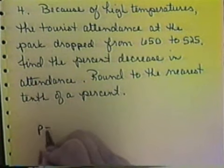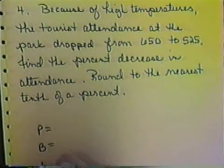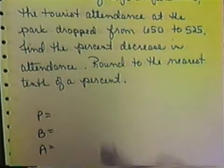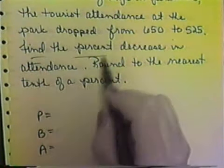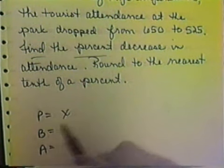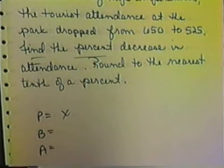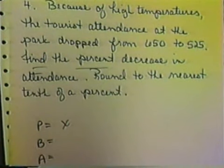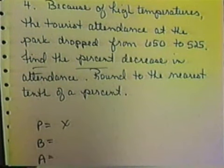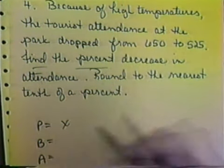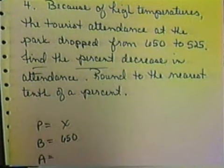We're going to identify our percent, our base, and our amount. The percent is what we're trying to find, so that must be our unknown. The base, remember, is what we started with. It says it dropped from $6.50 to $5.25, so what was the original amount? That's what the base is — the original amount. Since it dropped from $6.50, that means $6.50 is our base.